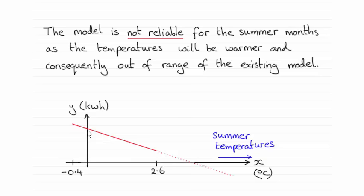Now, if we use that model, you can see the line would carry on, say something like this. And when we get the summer temperatures, which are going to be a lot warmer, we could end up having readings that are in the negative y sense, which would be silly anyway.